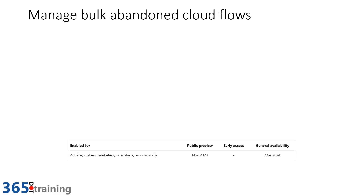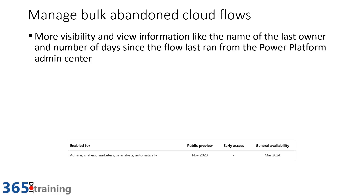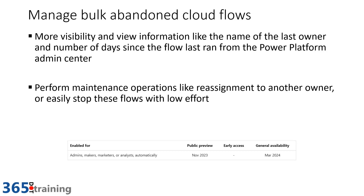For admins, there's a feature for managing bulk abandoned cloud flows — flows created by people who have since left the organization. Today, reassigning them is done one at a time, which is very tedious. The new feature gives visibility into the last owner and number of days since the flow last ran, all from the admin center. Admins will be able to perform bulk maintenance operations like reassignment or stopping flows. This goes to public preview in November 2023, with GA around March 2024.